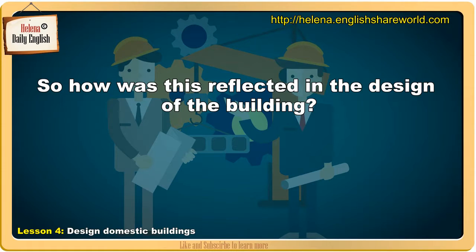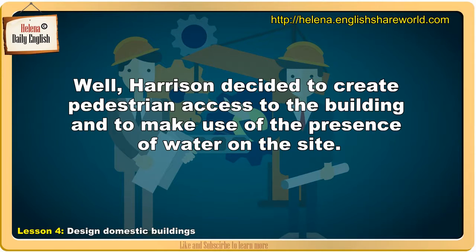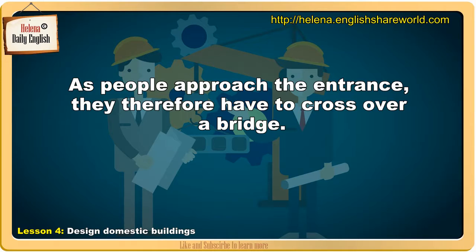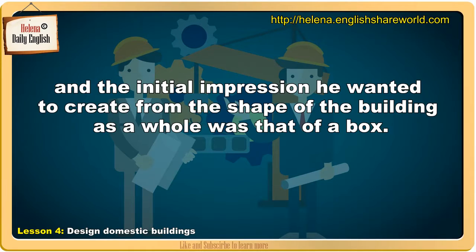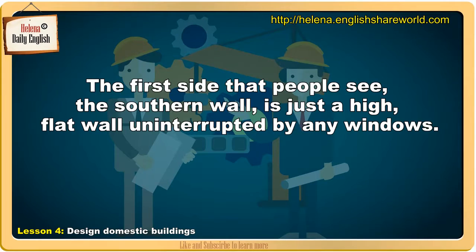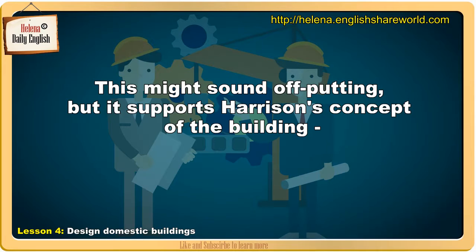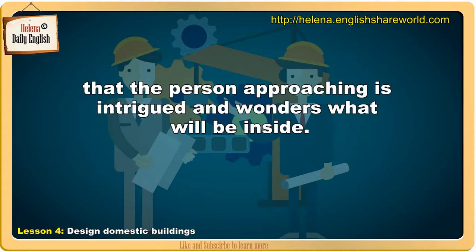So how was this reflected in the design of the building? Well, Harrison decided to create pedestrian access to the building and to make use of the presence of water on the site. As people approached the entrance, they therefore have to cross over a bridge. He wanted to give people a feeling of suspense as they see the building first from a distance and then close up, and the initial impression he wanted to create from the shape of the building as a whole was that of a box. The first side that people see — the southern wall — is just a high, flat wall uninterrupted by any windows. This might sound off-putting, but it supports Harrison's concept that the person approaching is intrigued and wonders what will be inside.